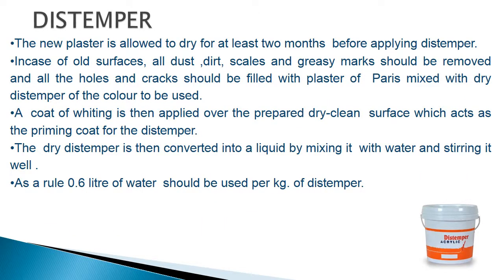New plaster should be allowed to dry for at least 2 months before applying distemper. For old surfaces, all dust, dirt, scales and greasy marks should be removed, and holes and cracks filled with plaster of Paris mixed with dry distemper of the color to be used. A coat of whiting is then applied over the prepared dry clean surface as the priming coat. The dry distemper is converted into liquid by mixing with water — 0.6 liters of water per kg of distemper.